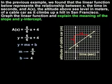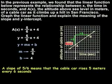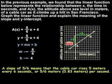Next, we're asked to explain the meaning of the slope and y-intercept. To explain the meaning of the slope, we can see from the graph that a slope of 5 over 6 means that the cable car rises 5 meters every 6 seconds, or 5 sixths meters, 0.83 meters, per second. In other words, for every second that goes by, the altitude of the cable car increases by 0.83 meters.